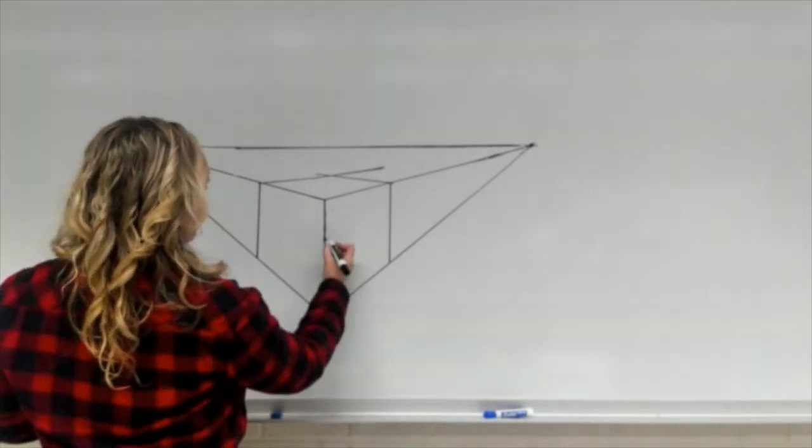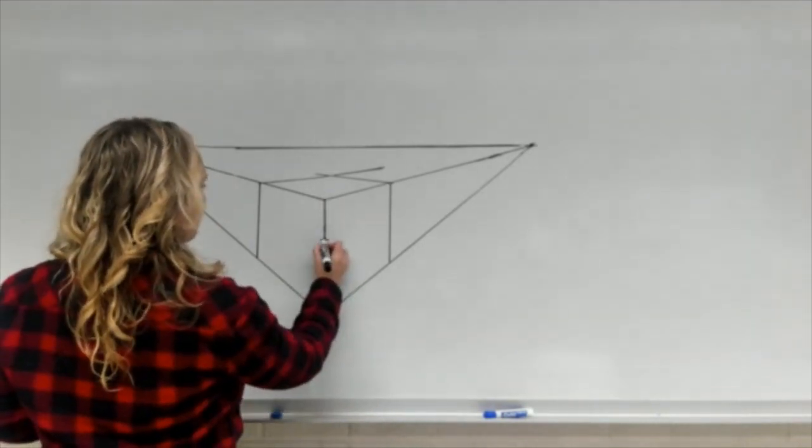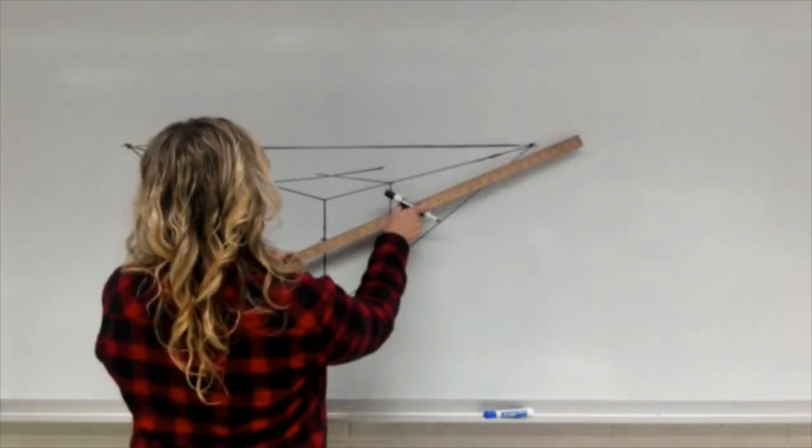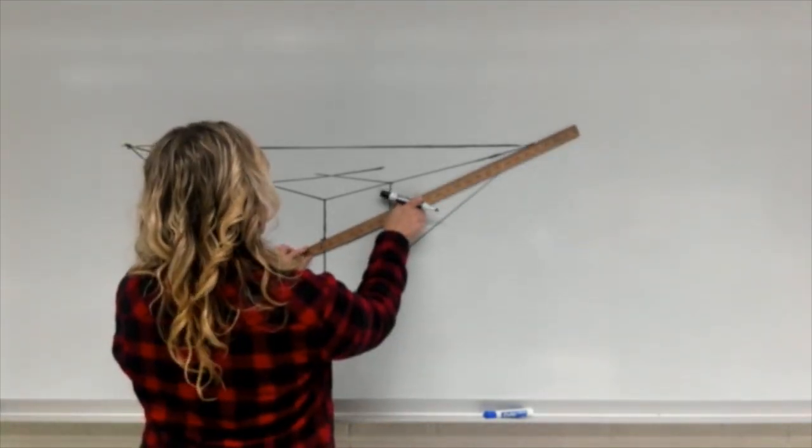Now you divide that middle line into three equal parts. Use a ruler and measure. Make sure that it is exactly three.